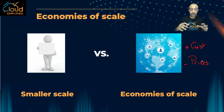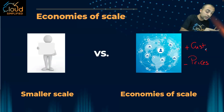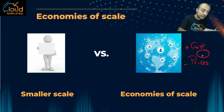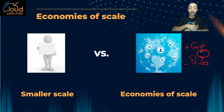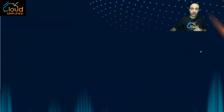Aggregated customer usage is the key term for your exam. This works as a flywheel: the lower AWS reduces prices, the more customers come into AWS data centers, which further drives down prices. And that's the economies of scale.